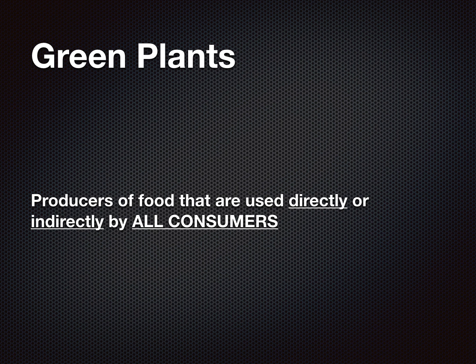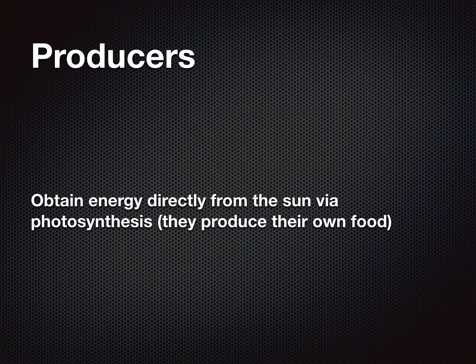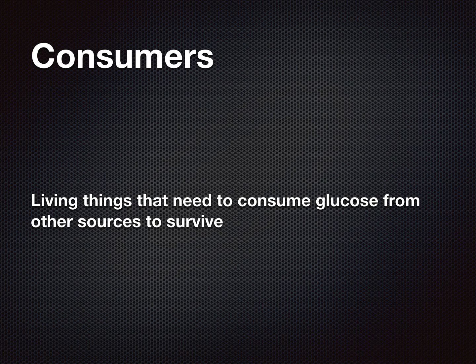Producers are the first level of the food chain after the sun. They obtain their energy directly from the sun via photosynthesis, which means they can produce their own food — hence 'producer.' Consumers are living things that need to consume glucose from other sources to survive — they have to consume it to get energy. They can't make their own food, meaning humans, wolves, bears, fish — so, consumers.